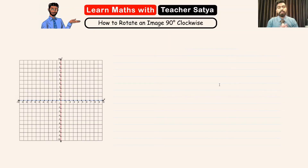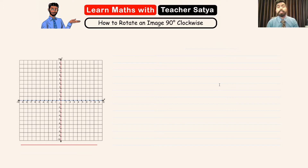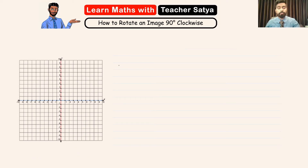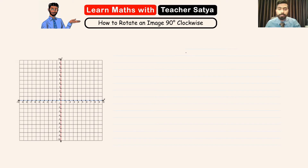This is what we call the coordinate grid, and in a coordinate grid we have four quadrants. Now in order to do a 90 degree clockwise rotation from the origin, which is right here at (0, 0), there is a formula. When we name a point we always start with the x-axis and then go to the y-axis.